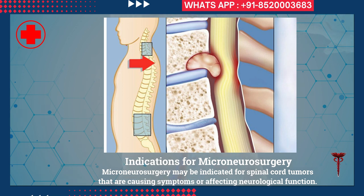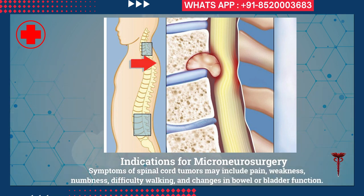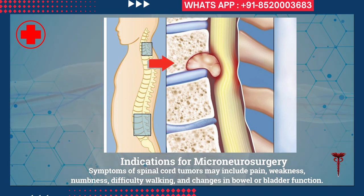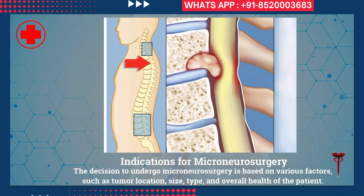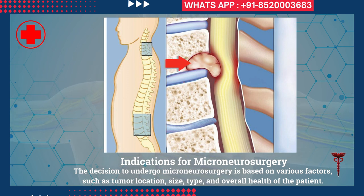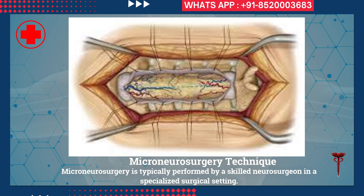Indications for micro neurosurgery: micro neurosurgery may be indicated for spinal cord tumors that are causing symptoms or affecting neurological function. Symptoms of spinal cord tumors may include pain, weakness, numbness, difficulty walking, and changes in bowel or bladder function. The decision to undergo micro neurosurgery is based on various factors such as tumor location, size, type, and overall health of the patient.